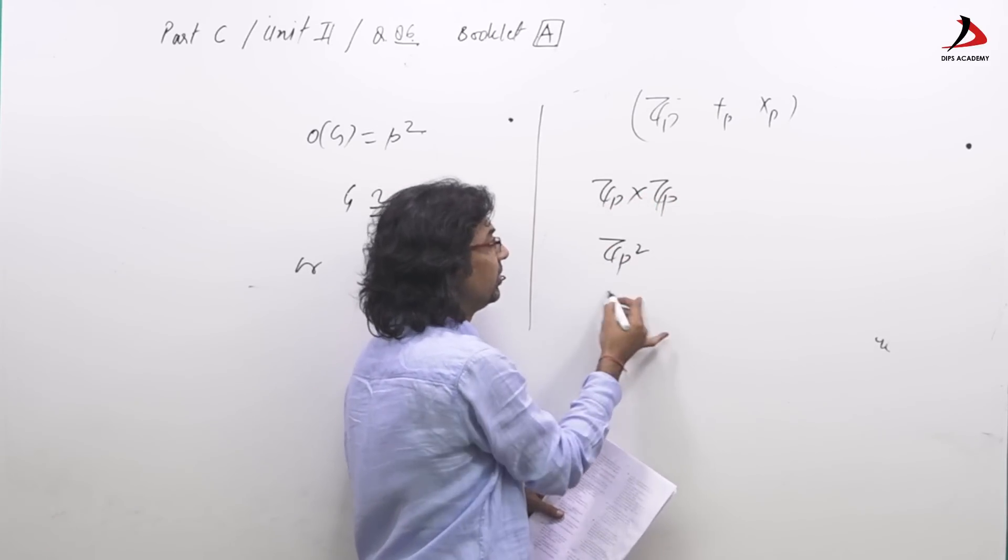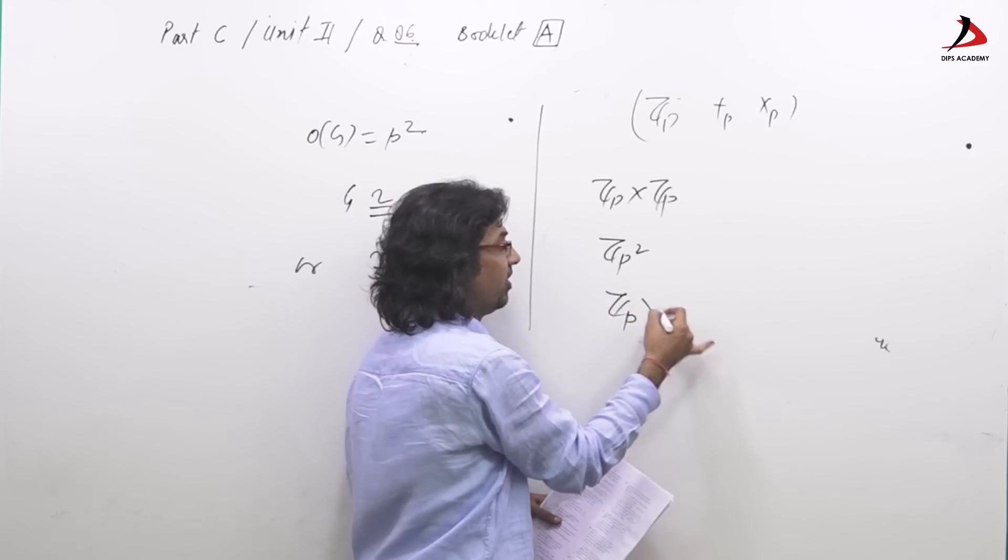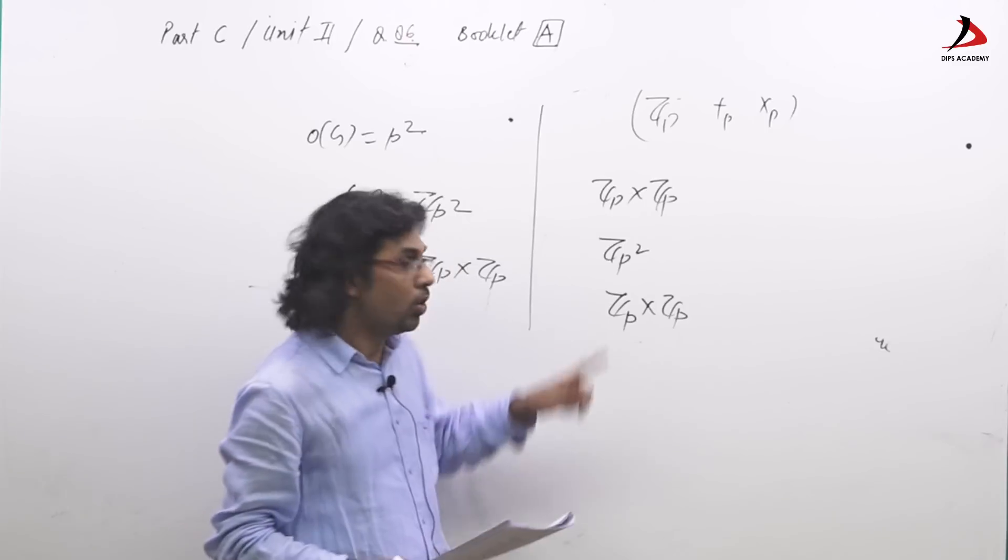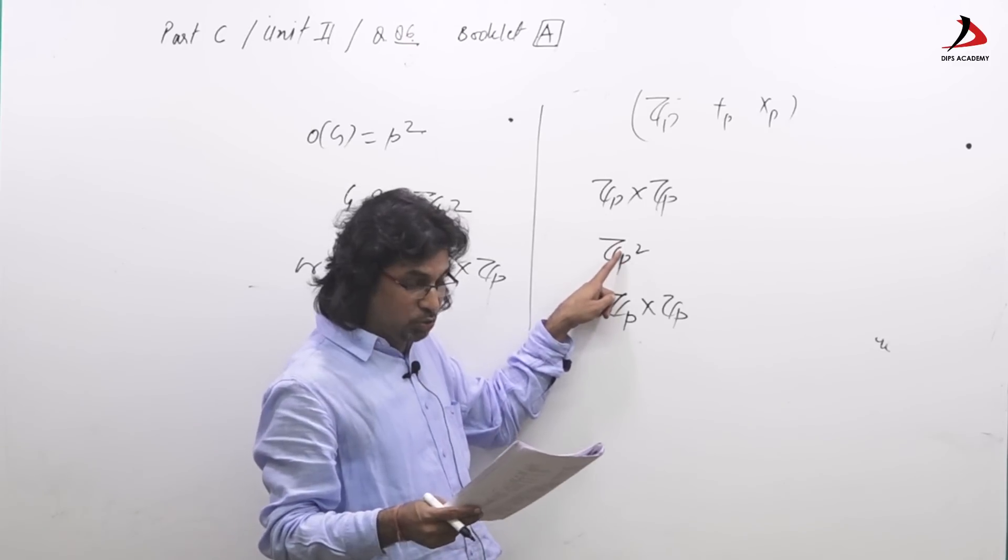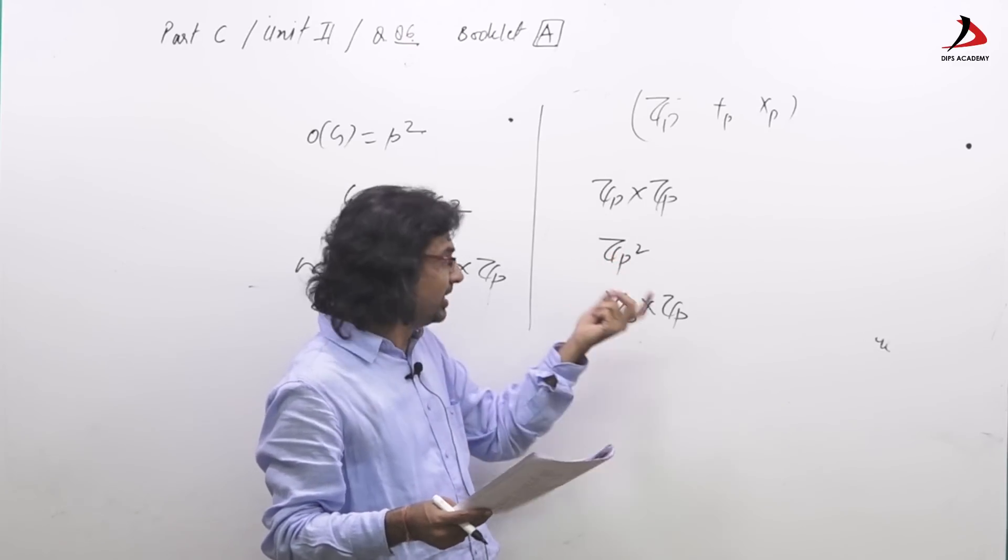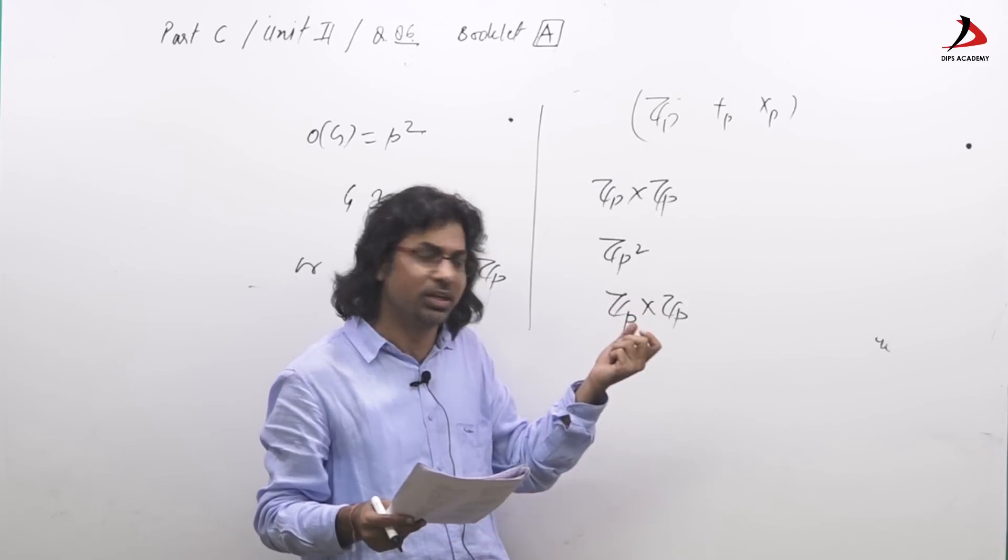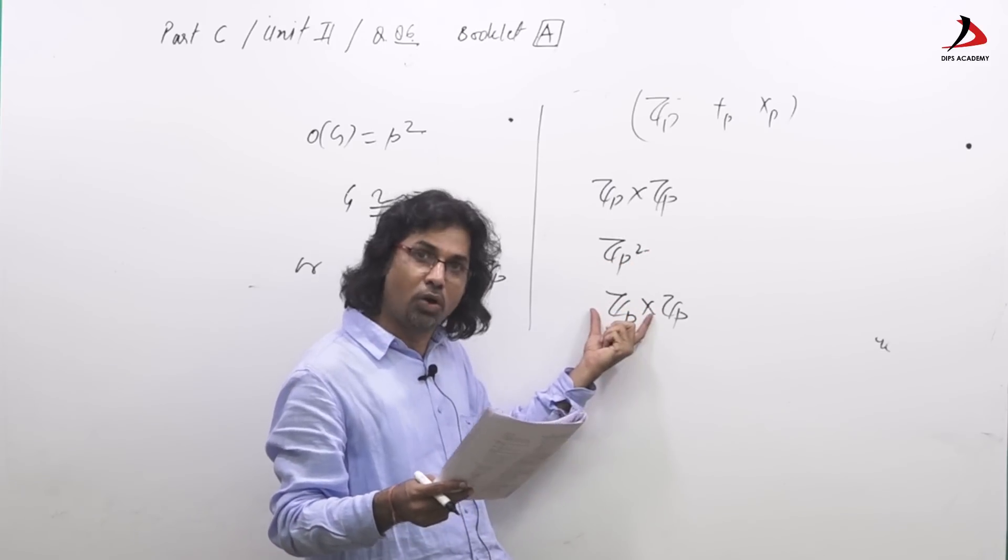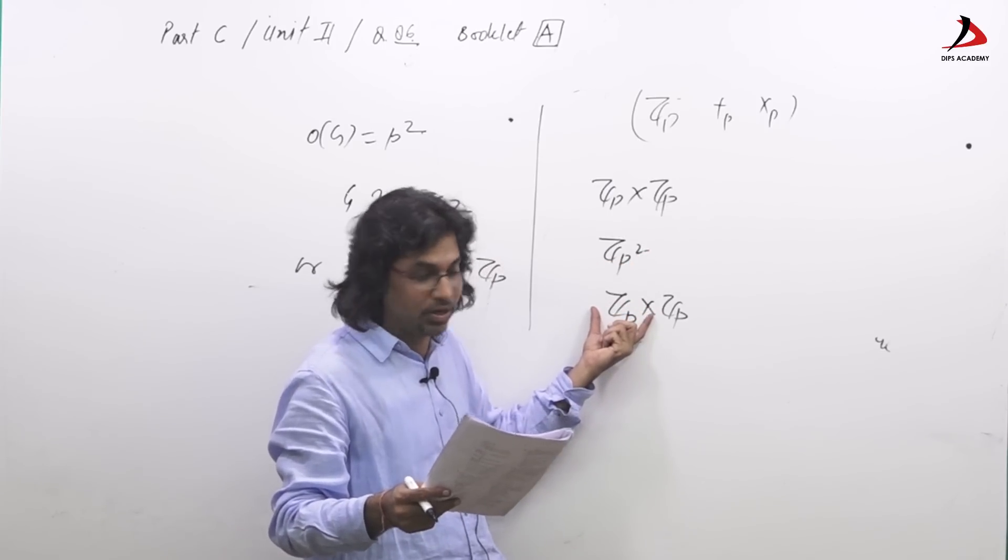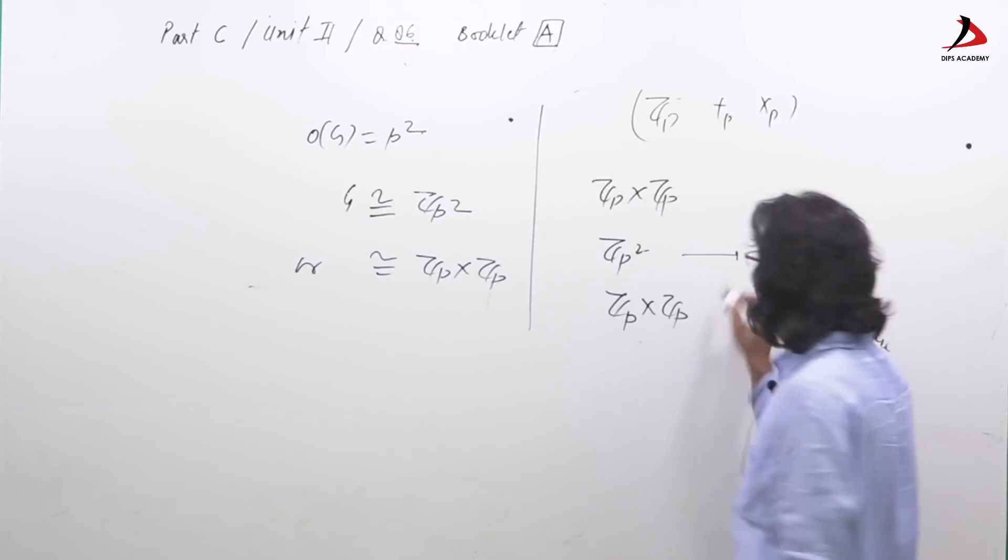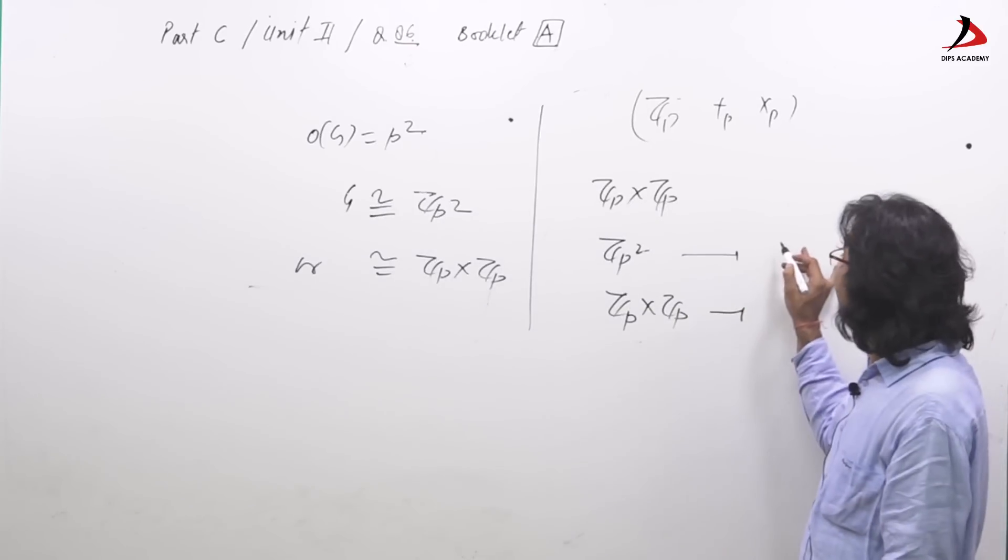We have these two rings of cardinality P square. Rather they are saying order but we avoid to say order. These are two rings of order P square, cardinality P square, but with the help of this or this we can define zero ring.